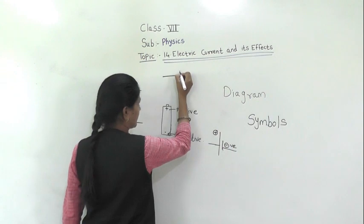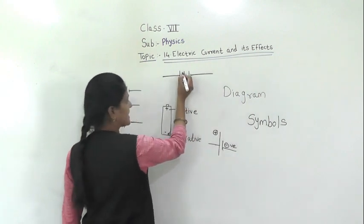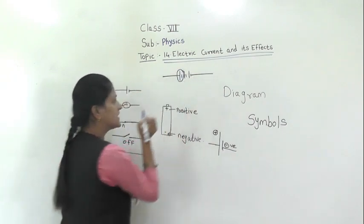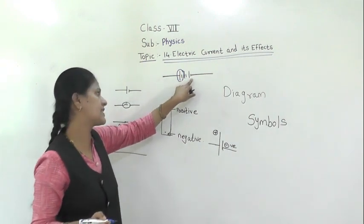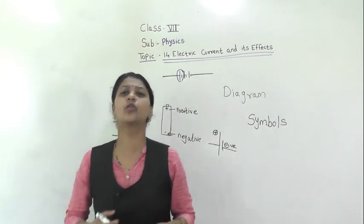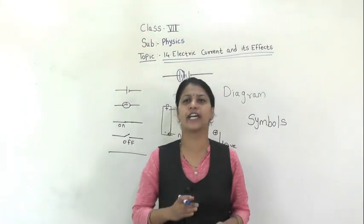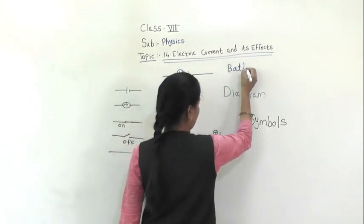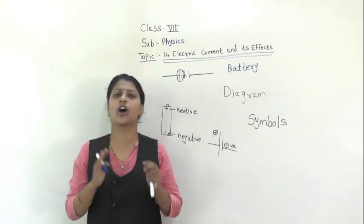Just see and tell me — which is the symbol? This is the symbol of a cell. So this is again positive, negative — that is a cell. This is also a cell. It means the battery consists of one or two more cells. The battery is nothing but a combination of one or two cells — that is called a battery.